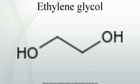Ethylene glycol is primarily used as a raw material in the manufacture of polyester fibers and fabric industry, and polyethylene terephthalate resins used in bottling. A small percent is also used in applications such as antifreeze formulations. It is also used in the natural gas industry to remove water vapor from natural gas before further processing, in much the same manner as TEG.